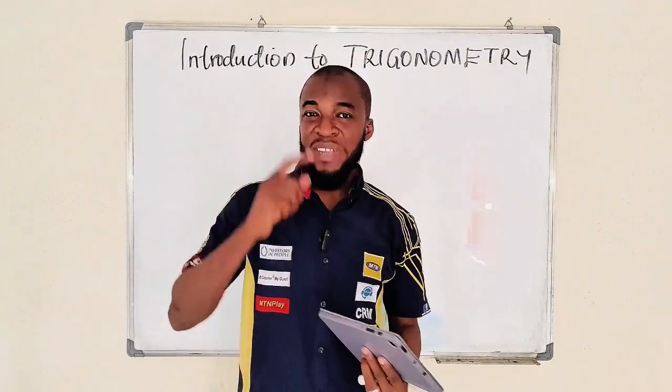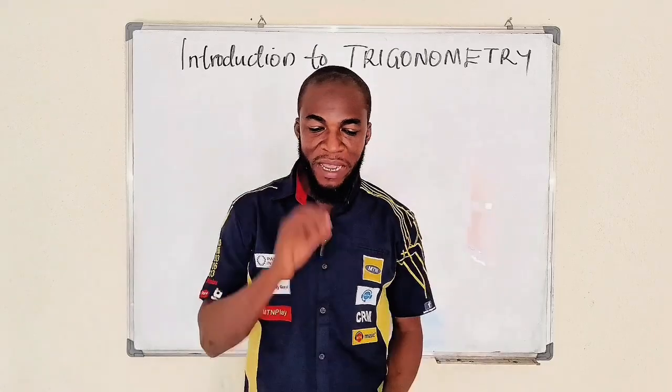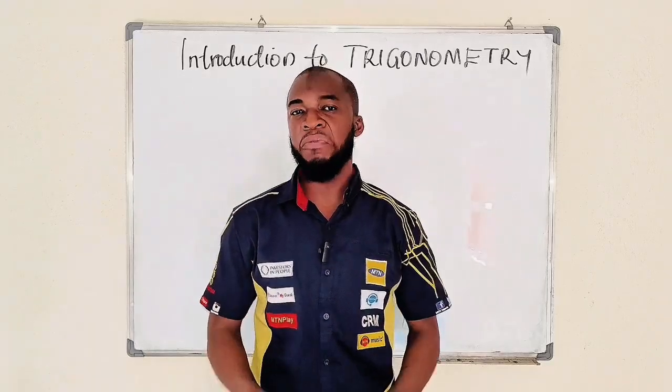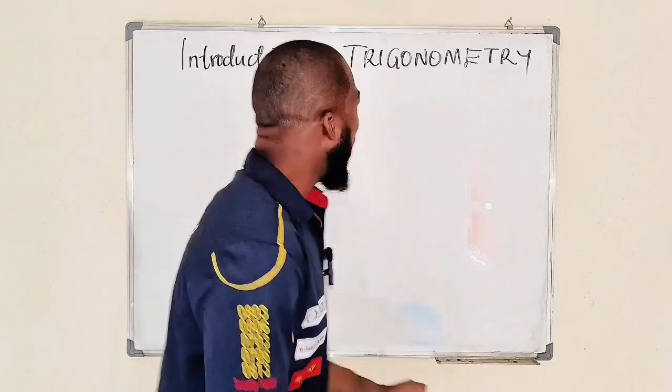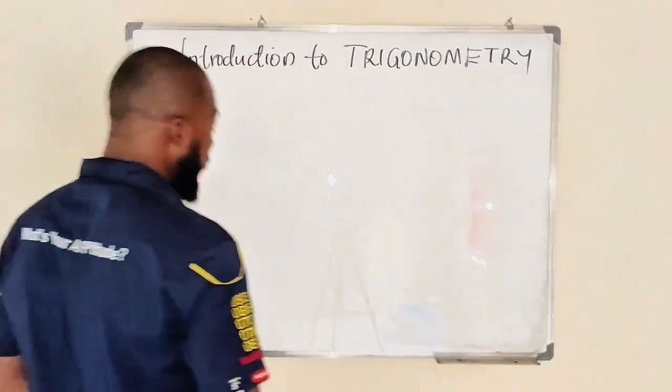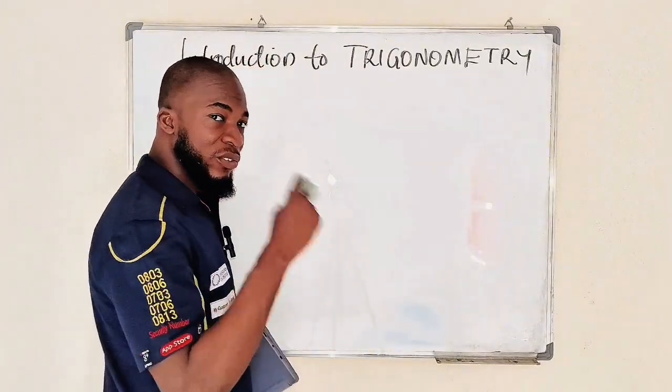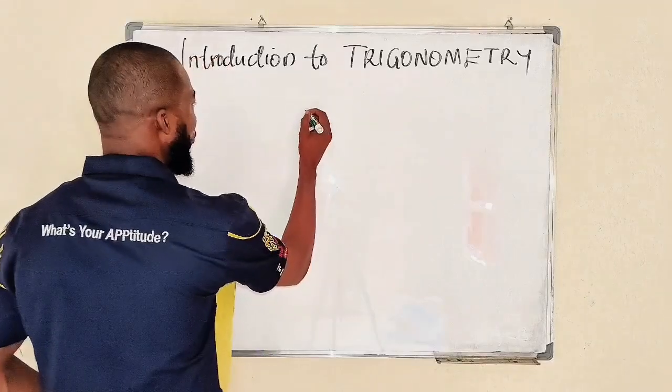Suppose we have a triangle. We know it is a plane figure that has three sides and three interior angles, something like this. This is a triangle, right?